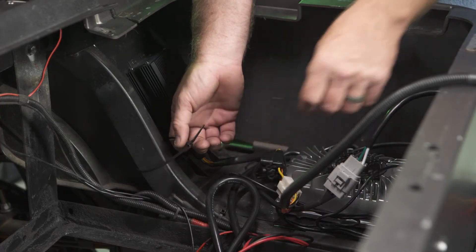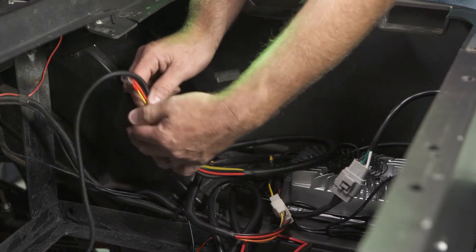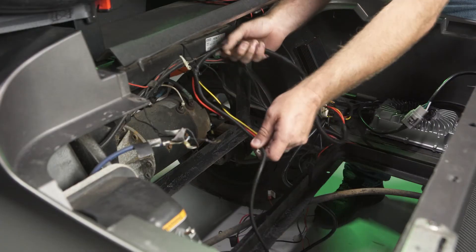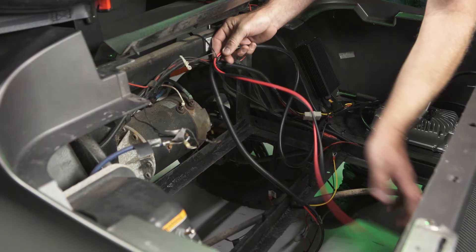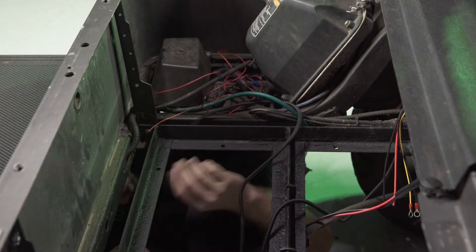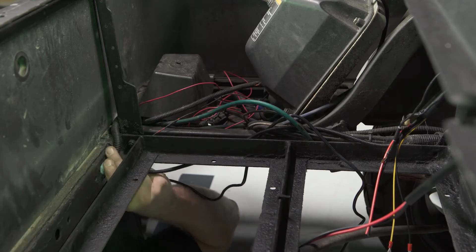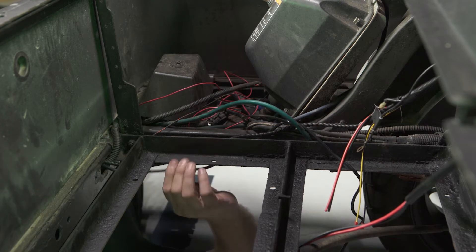Route the DC wires toward the battery. Route the orange DC to DC converter key on power wire and meter harness under the cart and up into the dash panel.